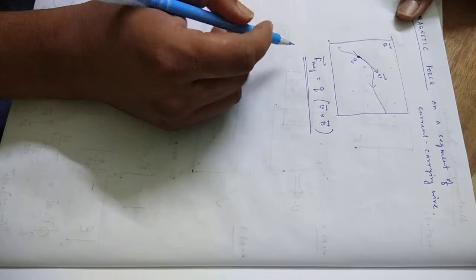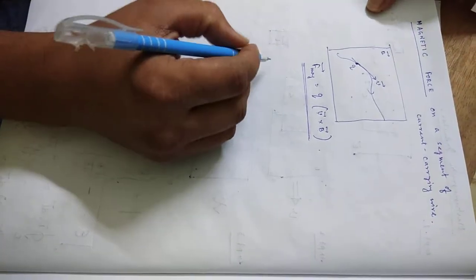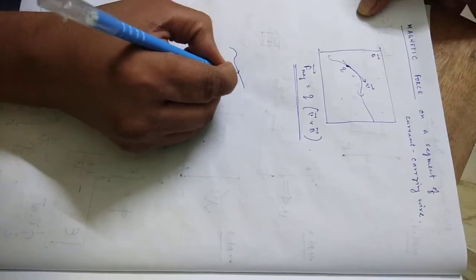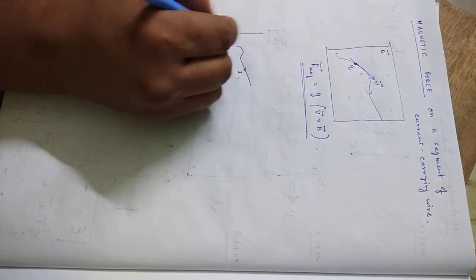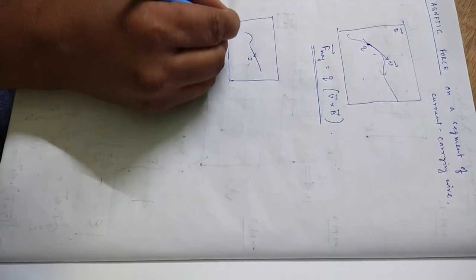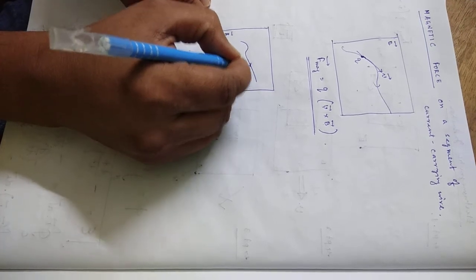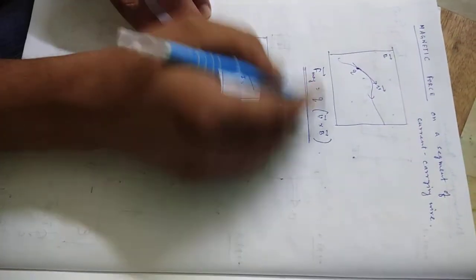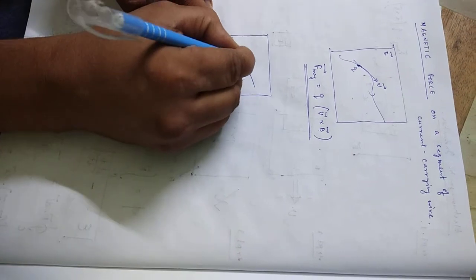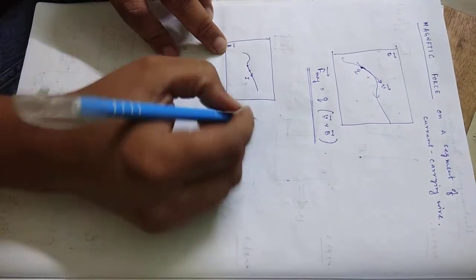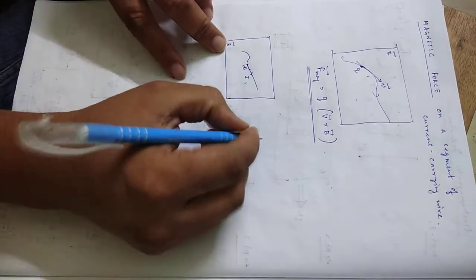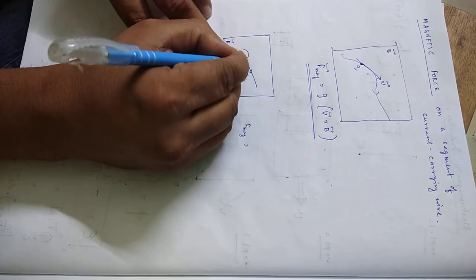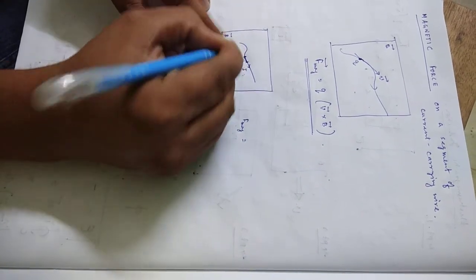Now, in this section I want to calculate the magnetic force on a segment of a current-carrying wire. Let's say this is a wire carrying a steady current I, and this wire is kept in a magnetic field B. I want to calculate the magnetic force that will be acted on this current-carrying wire segment. The idea is very simple — I will be using the same formula. Let's say this is the DL element I am choosing from this current loop. The magnetic force will be DQ into V cross B, where DQ is the charge inside this small segment.